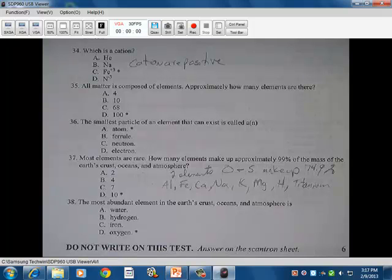37. Most elements are rare. How many elements make up approximately 99% of the mass of the earth, oceans, and the atmosphere? So we have two elements, oxygen and sulfur that make up 74%, almost 75%. And then the other ones, aluminum, iron, calcium, sodium, potassium, magnesium, hydrogen, and titanium. Then those ten elements together make up 99% of the earth. The crust, the oceans, and the atmosphere. So those are ten there that make up that majority. The most abundant element in the earth's crust is oxygen. Talked about that up there.